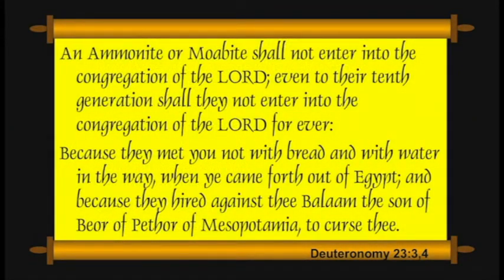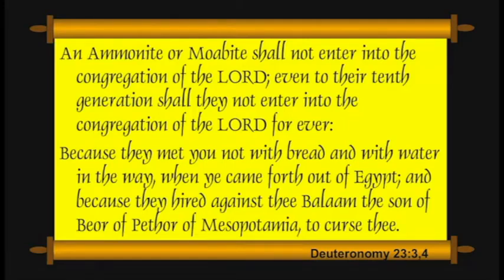Continuing this theme: Ammonites and Moabites were results of incest. An Ammonite or Moabite shall not enter into the congregation of the Lord forever — there isn't a ten-generation hiatus here. It's not because of their incestuous origins, but a different reason: they met you not with bread and water when you came forth out of Egypt, and they hired Balaam the son of Beor of Mesopotamia to curse Israel. Both these peoples were excluded not because of their incestuous origins, but because of their endeavor to bring a divine curse upon God's chosen people instead of giving them hospitality.